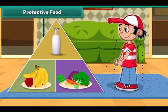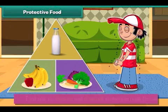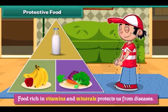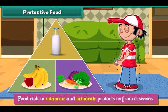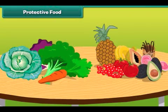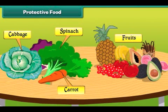Food rich in vitamins and minerals protects us from diseases. Therefore it is called protective food. Green leafy vegetables such as spinach and cabbage, carrots and fruits have lots of vitamins and minerals.